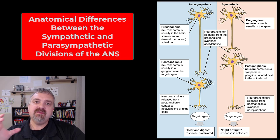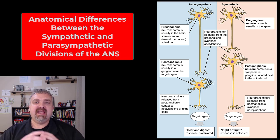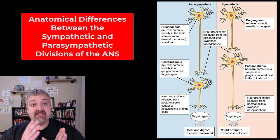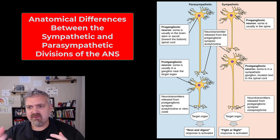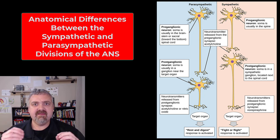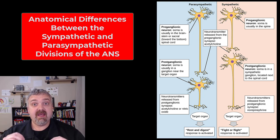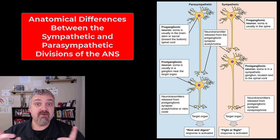Hey everybody, Dr. O here. In this video, we're going to cover the anatomical differences between the sympathetic and parasympathetic nervous systems. I want to do this because I know pre-ganglionic, post-ganglionic — this stuff gets a little messy. But if you understand these differences, I think it will help you understand how they function and why these two divisions are so different in the end.